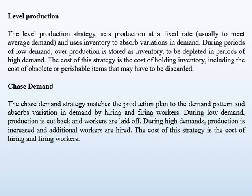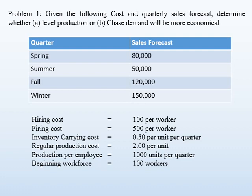Let us now look at a problem to understand how level production and chase demand methods are applied. Sales forecast for four quarters are given: spring is 80,000; summer is 50,000; fall is 120,000; and winter is 150,000. Additional data: hiring cost is $100 per worker, firing cost is $500 per worker, inventory carrying cost is $0.50 per unit per quarter, regular production cost is $2 per unit, production per employee is 1,000 units per quarter, and beginning workforce is 100 workers. We notice that firing cost is higher than hiring cost because of additional costs like training, which are included in the firing cost.